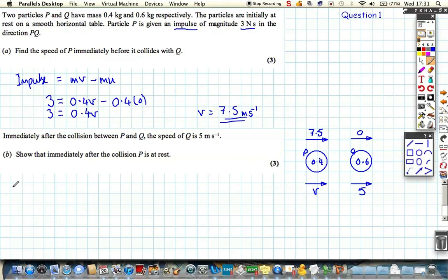So let's use the principle of the conservation of momentum. Now this tells us that the total momentum of the system before is equal to the total momentum of the system afterwards, such that mass times velocity, the momentum of P, 0.4 times 7.5, plus 0.6 times 0, which is obviously going to be 0, is equal to the momentum afterwards.